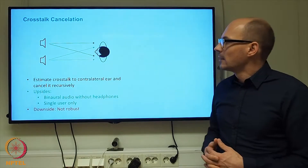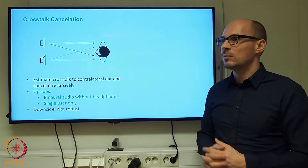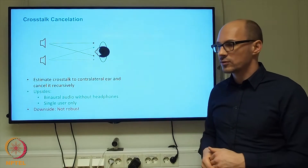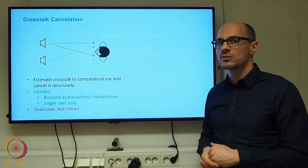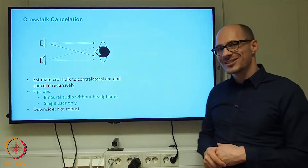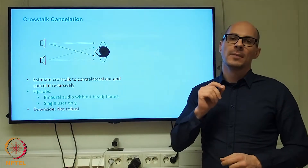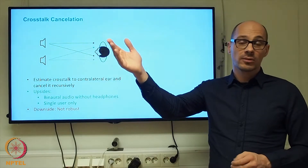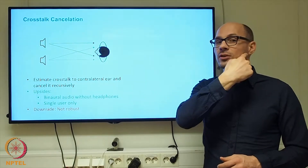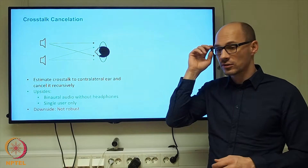A solution that would not have the restriction of only being able to render phantom sources between two loudspeakers makes use of so-called crosstalk cancellation. Crosstalk refers to the signal from, say, the right loudspeaker in a stereo system that spills over to the left ear — the contralateral ear. This is called crosstalk.